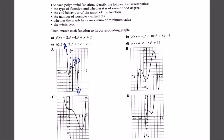Odd degrees — one, three, five — typically have no global maximum or minimum, and the domain and range are both all real numbers. For even degrees — zero, two, four — we typically do have a maximum or minimum. For example, equation B has a maximum around 30, and the degree four example has a minimum at negative 50, giving a range of y greater than or equal to negative 50.